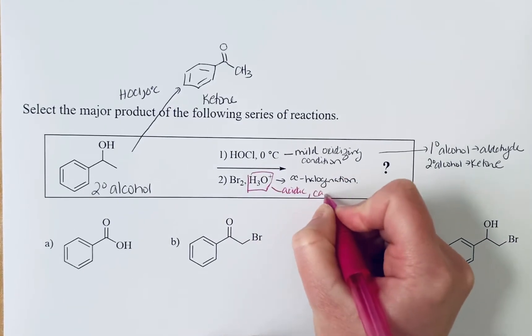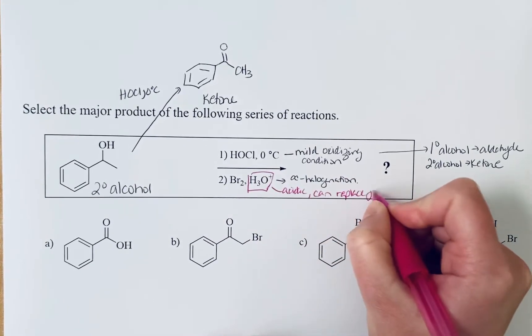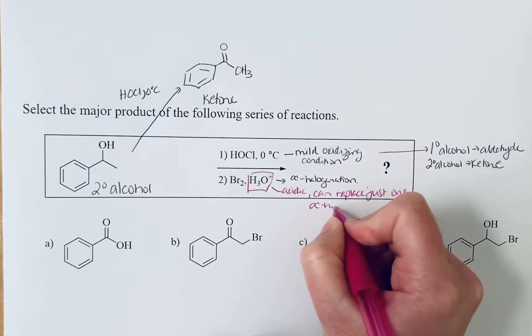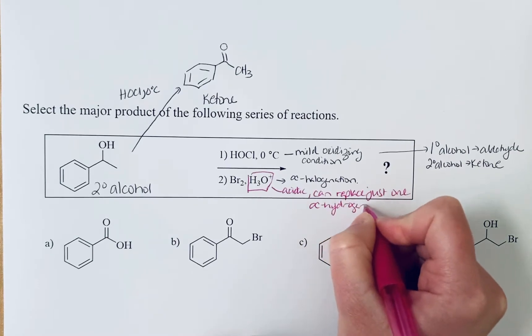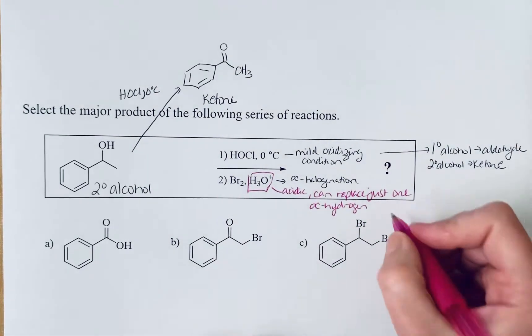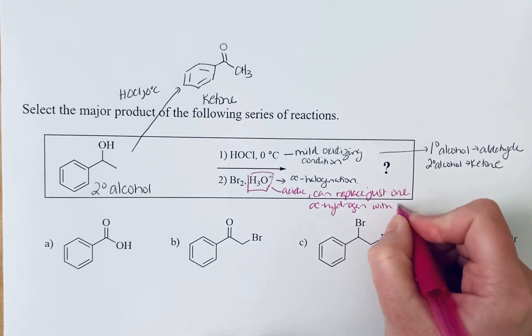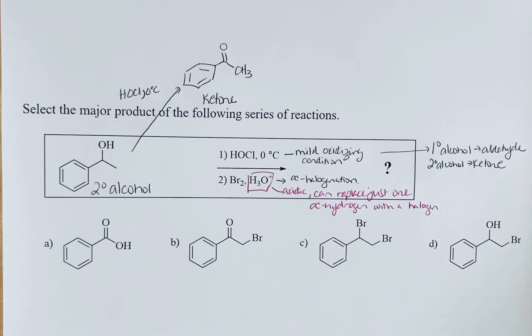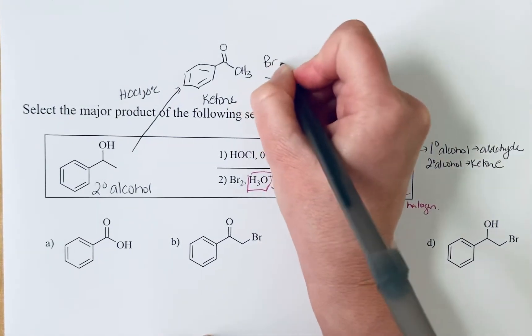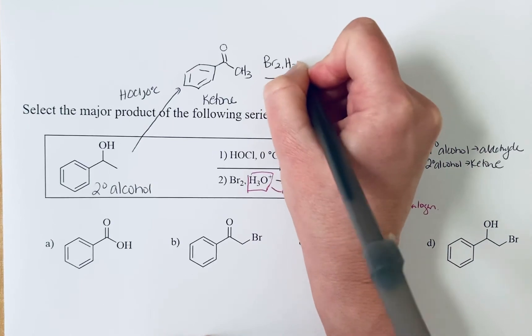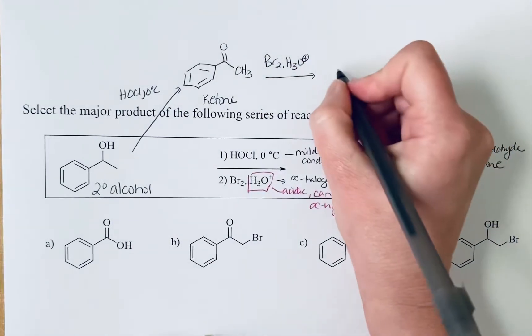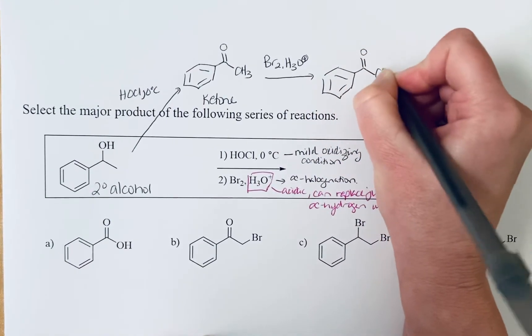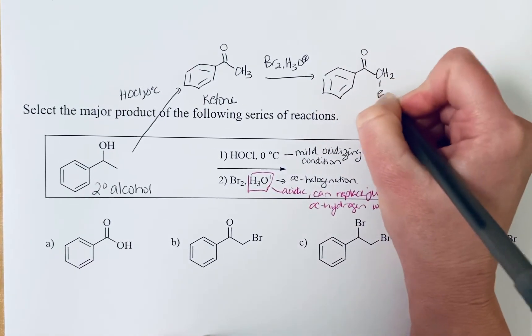We can replace just one alpha hydrogen and just to be clear what we're replacing that alpha hydrogen with is a halogen. In this case bromine. Once we do this reaction with the Br2 and aqueous acid we're going to replace one of these alpha hydrogens. We will end up with the alpha halo ketone right here.